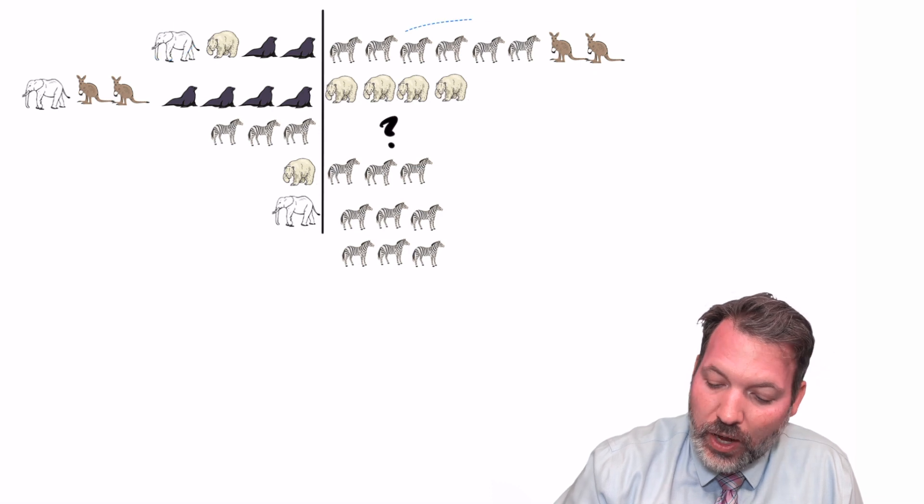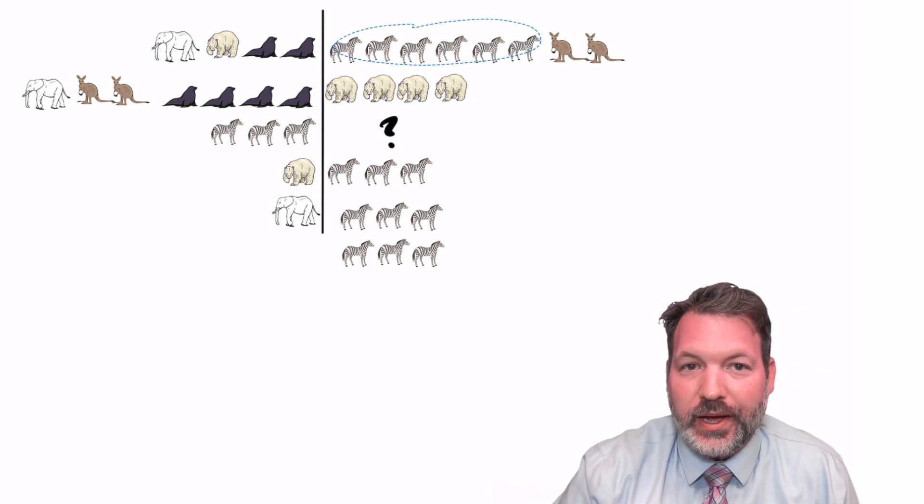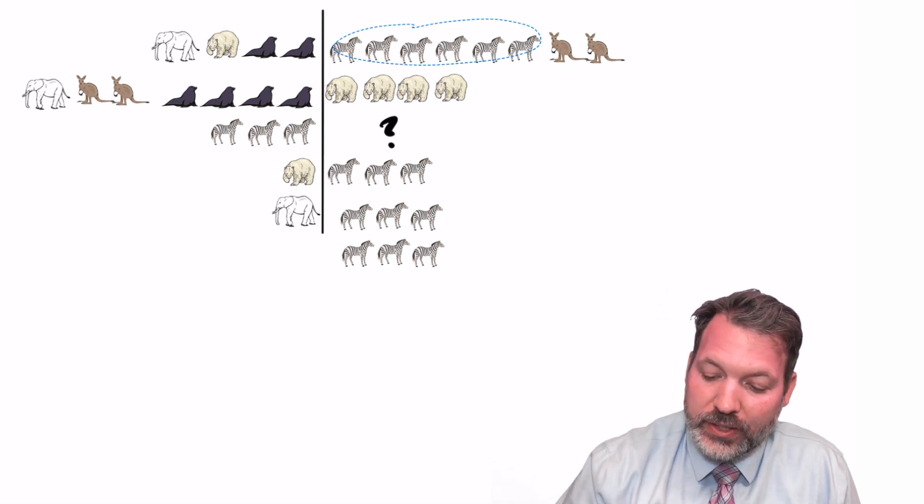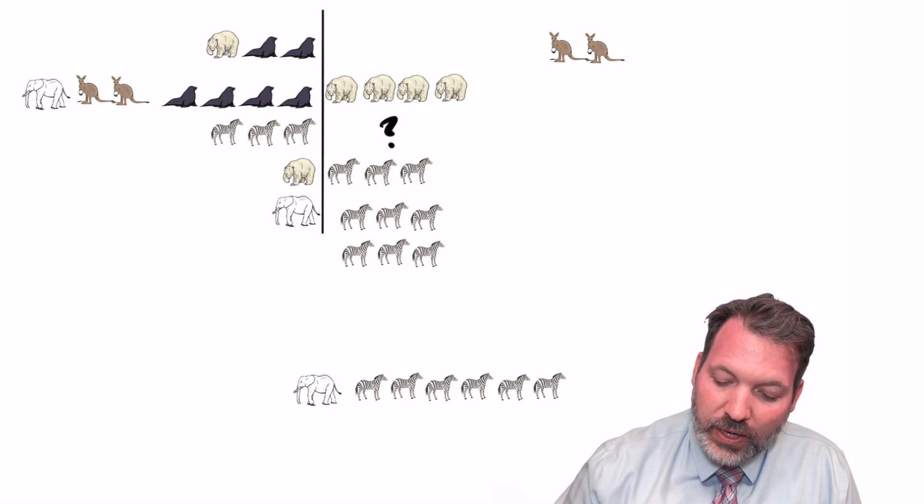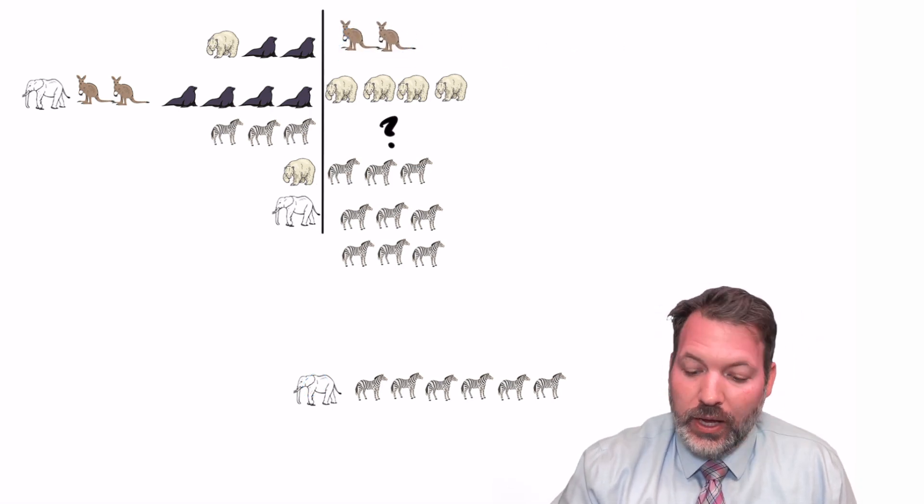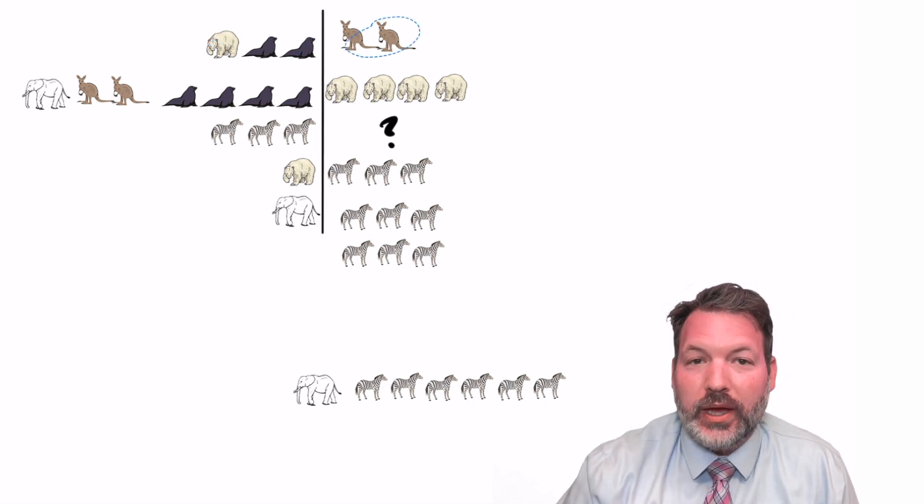This comes in handy because as we look up at the first deck, we can see we've got one elephant on the left side and six zebras on the right side. And so if we wanted to, we could take those away and we could get a new equivalence. Apparently, in this magical ark, a single polar bear and two seals are the equivalent of two kangaroos.